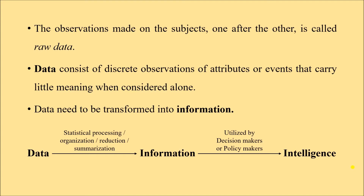For example, suppose you have a class of 200 students and the teacher decides to measure the blood pressure of each student. At the end of the day he has 200 systolic and 200 diastolic blood pressure readings — 400 different numbers. These numbers by themselves mean nothing; they are meaningless. That is why data needs to be transformed into meaningful information.